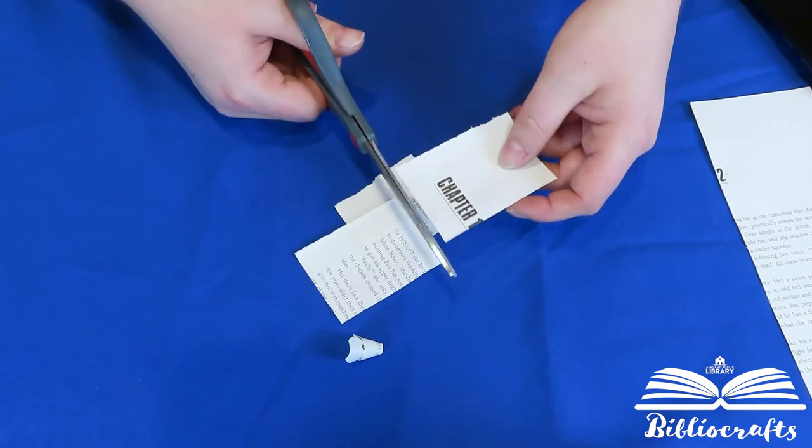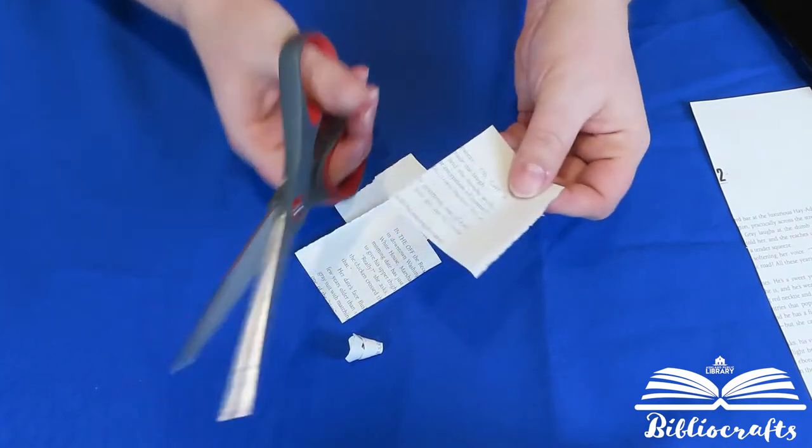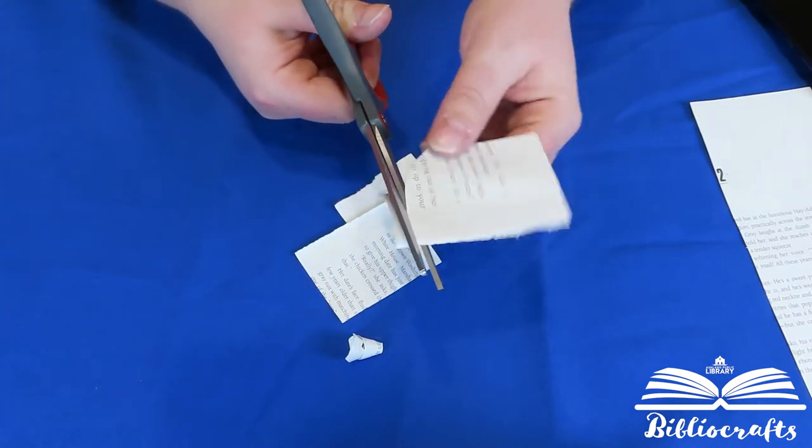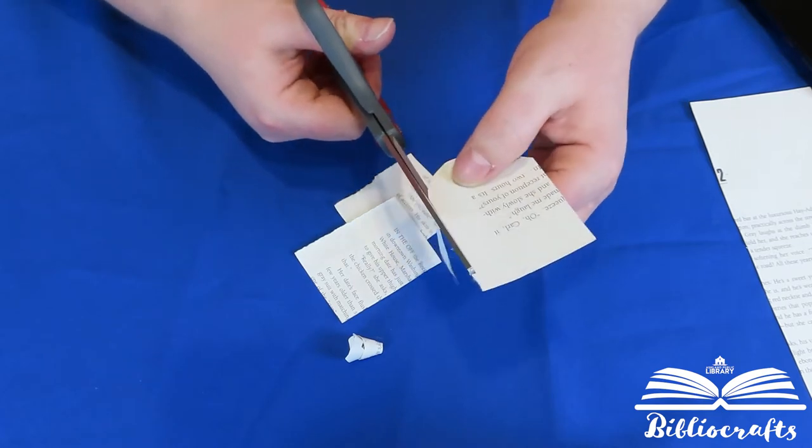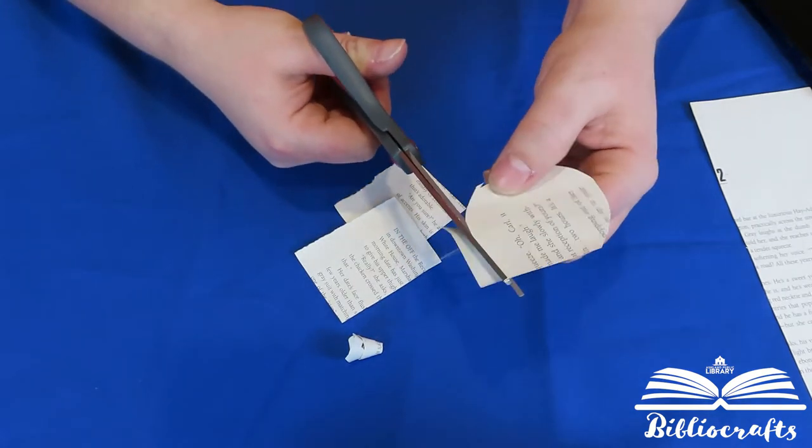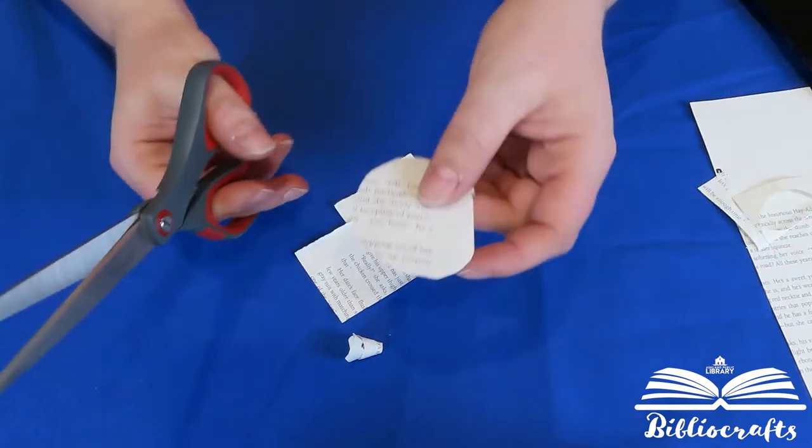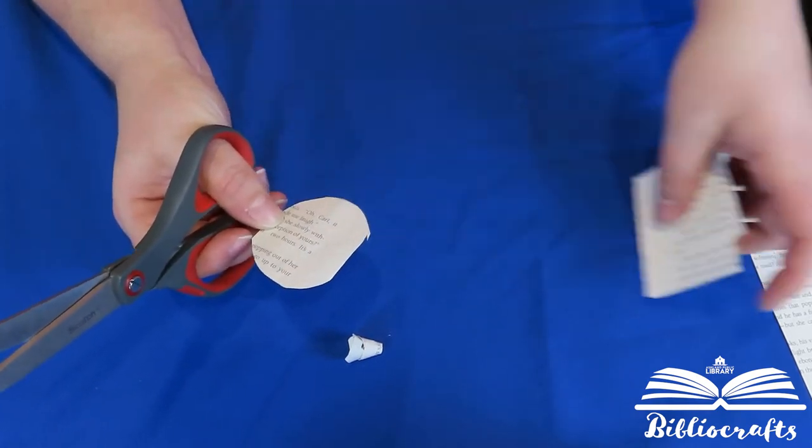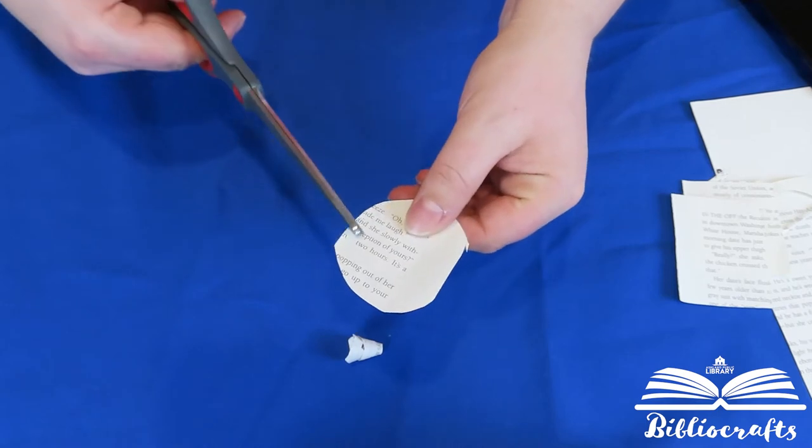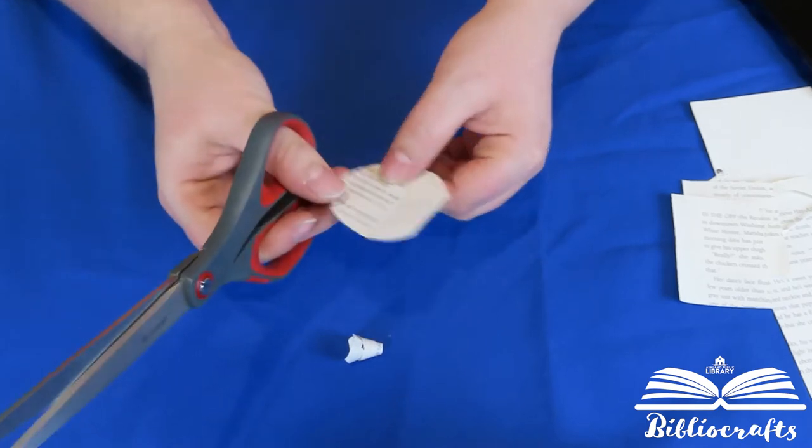So we're going to cut some squares and then we're going to turn these into circles and just sort of trim off and just roughly a circle. So there we go, and then cut a spiral into the center.